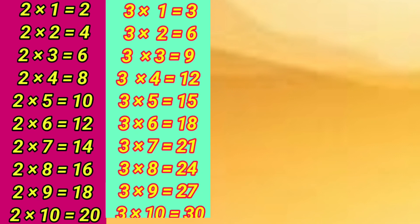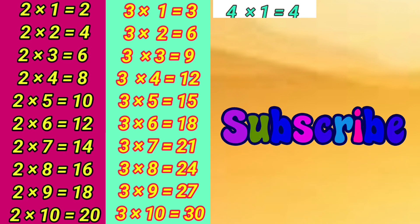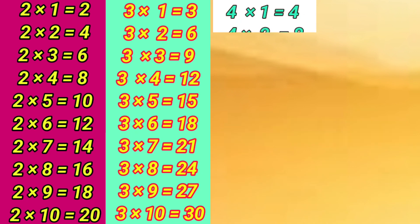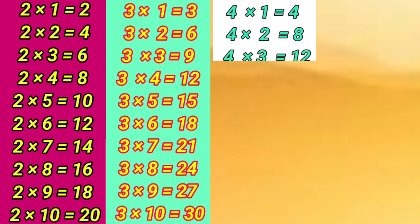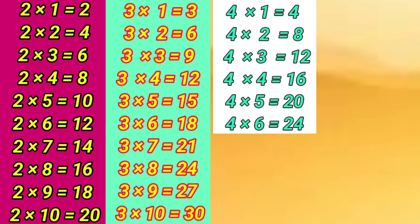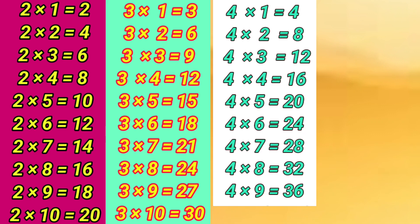3×10=30. 4×1=4, 4×2=8, 4×3=12, 4×4=16, 4×5=20, 4×6=24, 4×7=28, 4×8=32, 4×9=36, 4×10=40.